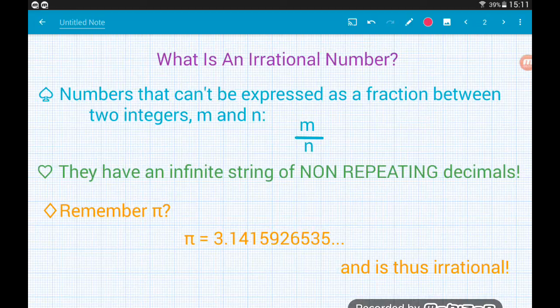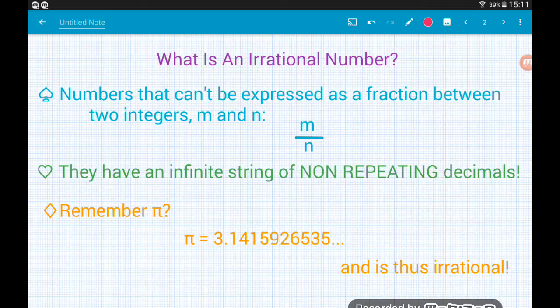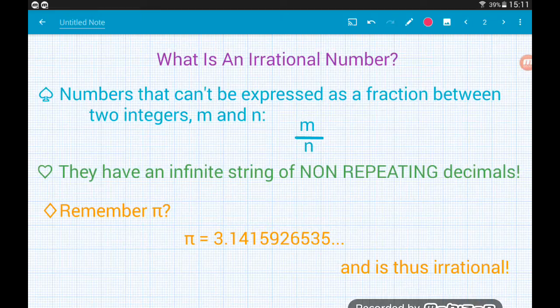So remember what an irrational number is, is a number that can't be expressed as a fraction or a ratio of two integer numbers, say m and n here.